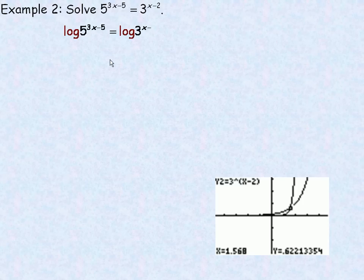And so the first thing I would do is I would take the log of both sides. I'm going to take the common log or the base 10 log of both sides. And now what I'm going to do is use that power law. The power law of logarithms says that you can take any logarithm of a power and write it as the exponent, the 3x minus 5, brought down and multiplied by the log of 5. Same on the right side here. The x minus 2 can be brought down and multiplied by the log of 3.